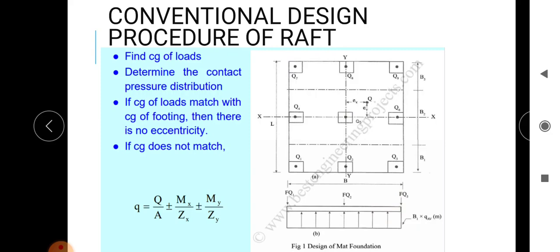The first step is to find the center of gravity of loads. Then determine the contact pressure distribution. The third step: if the center of gravity of the load matches with the center of gravity of the footing, there will be no eccentricity, and the equation for finding pressure q is equal to Q/A ± Mx/Zx ± My/Zy.